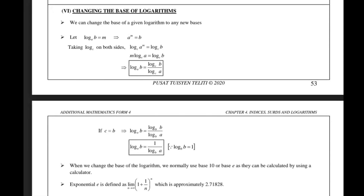It works like this. Let's say you have log base a of b, and we call this m. So we change from logarithm form to index form. When I change to index form, it goes like this: a to the power of m is now b.